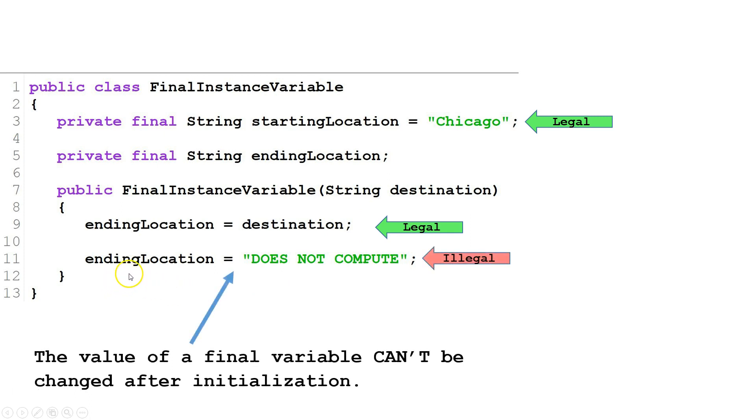Line 11 is not legal. Ending location has already been initialized, so we can't change the value since ending location has been declared final.